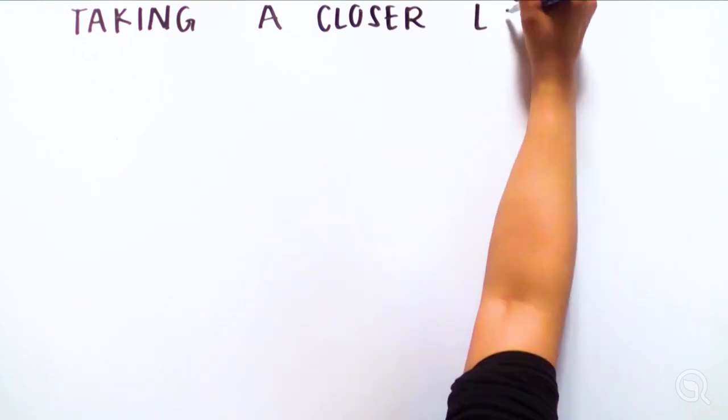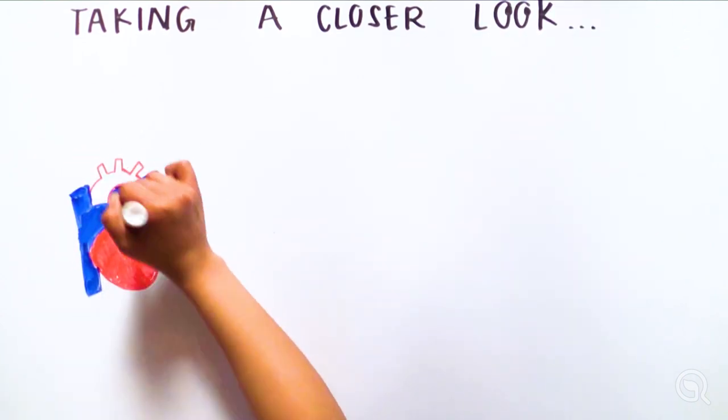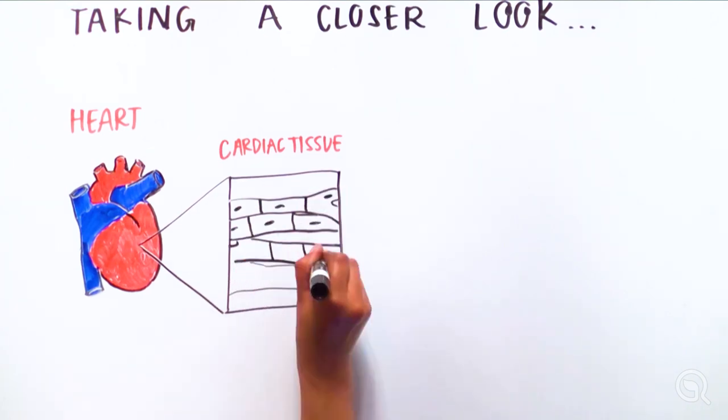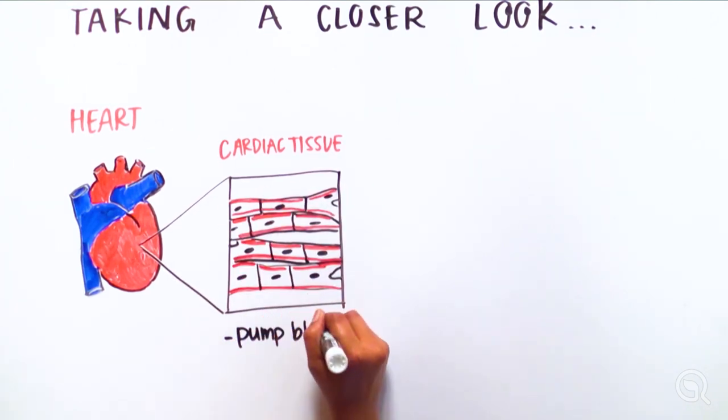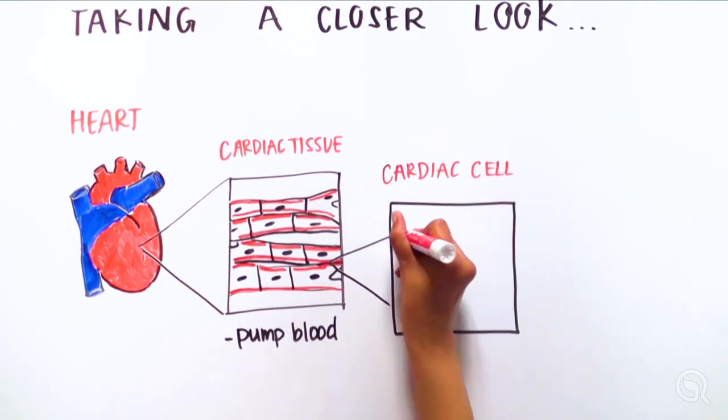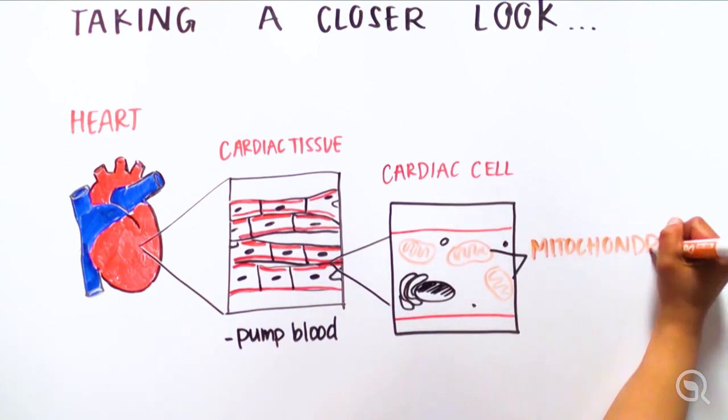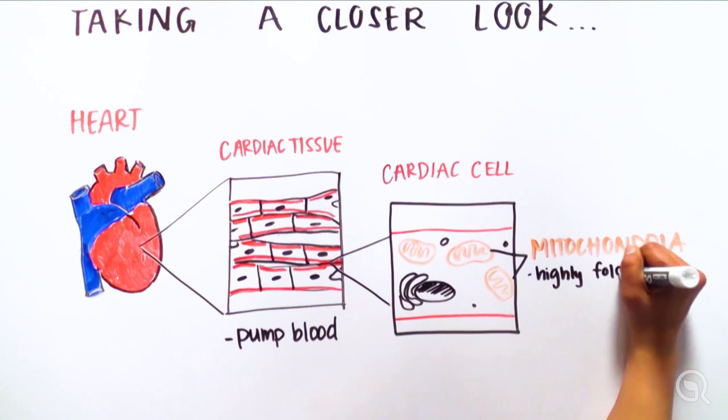Looking a little closer within her heart, we see millions of individual cells working together to pump blood throughout her body. Looking even closer, we see each heart cell is a tiny factory made of organelles like mitochondria that have specific jobs to support the cell's function.